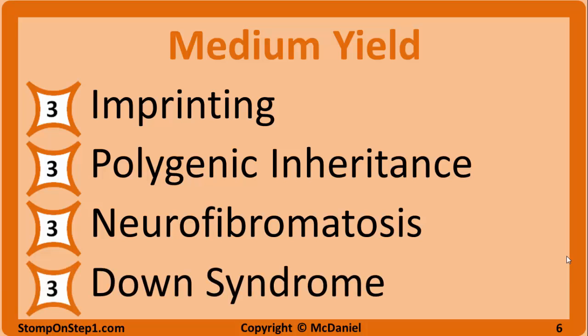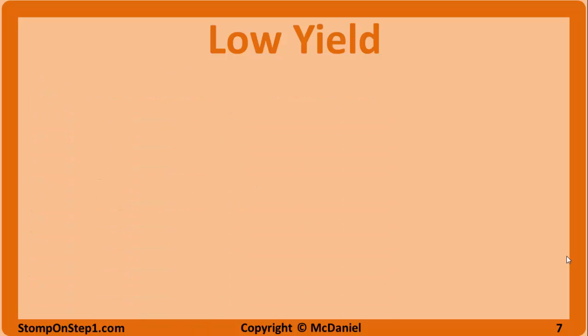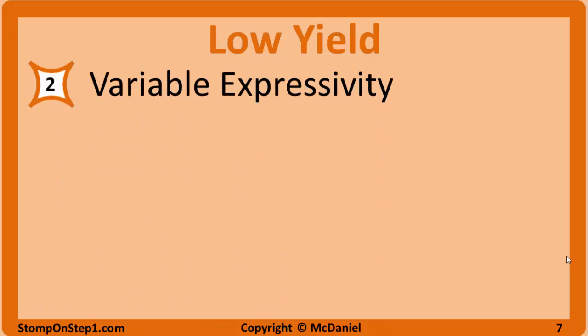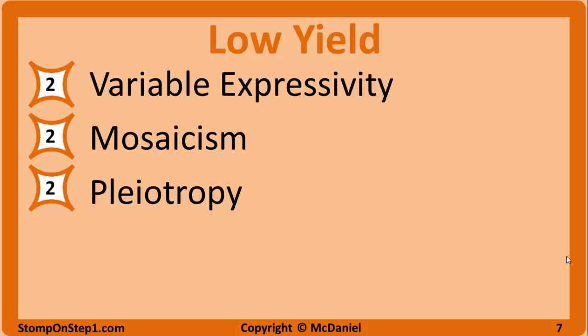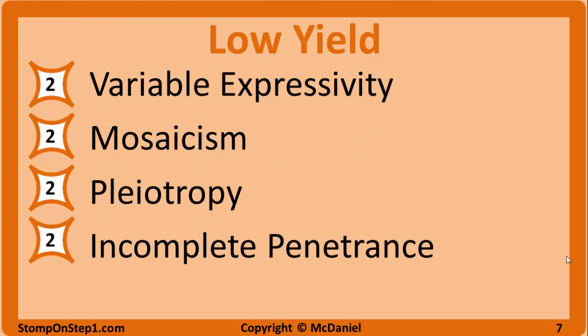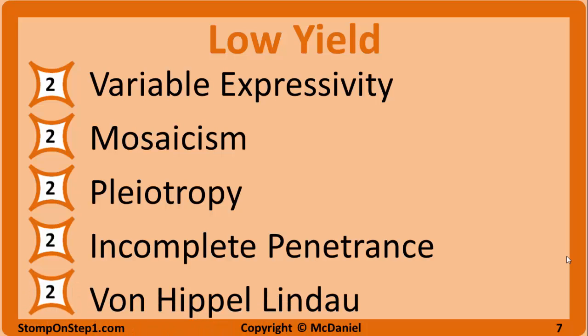Down syndrome: know the genetic basis is trisomy 21, how it presents on a quad screen or ultrasound, how the disorder presents clinically, and some high yield correlations. Now we're into the lower yield material that's still probably worth studying. This includes variable expressivity — the basic definition and common examples like neurofibromatosis; mosaicism — just the basic definition; pleiotropy — just the basic definition; incomplete penetrance — know a couple of examples and what it is; and finally, von Hippel-Lindau — the general genetics behind the disease and the clinical presentation.